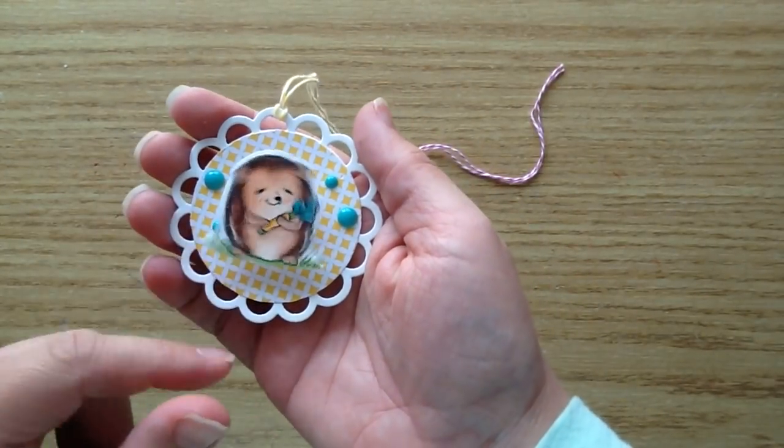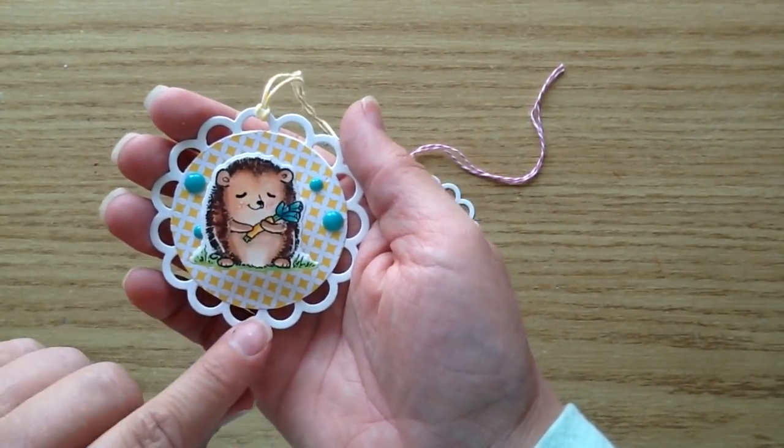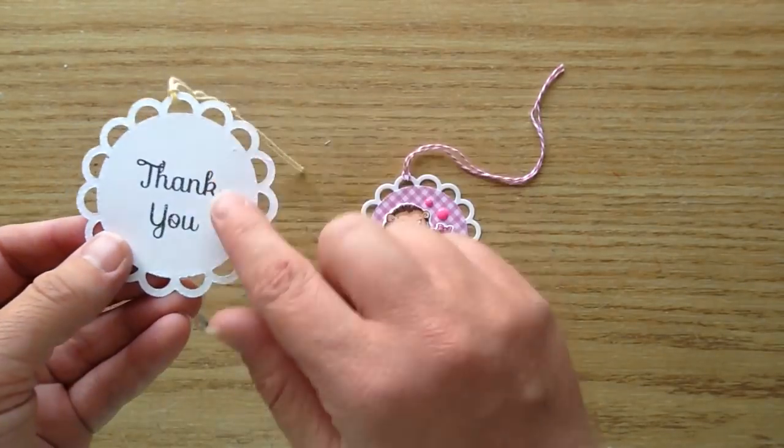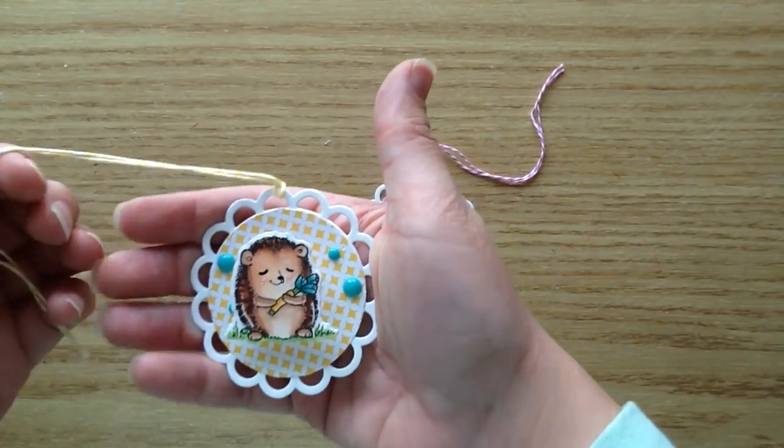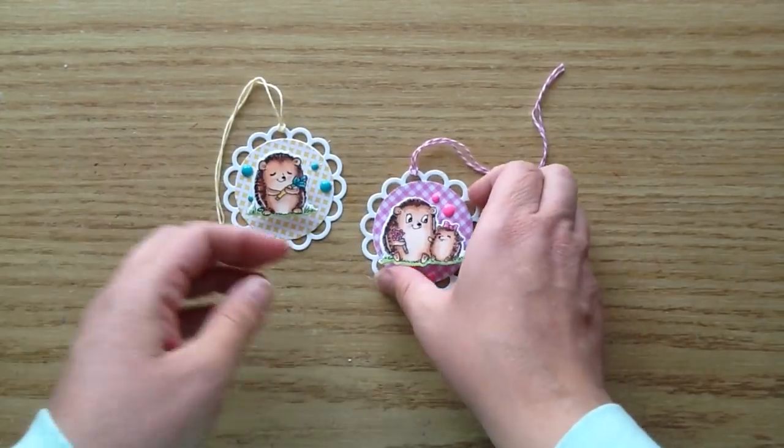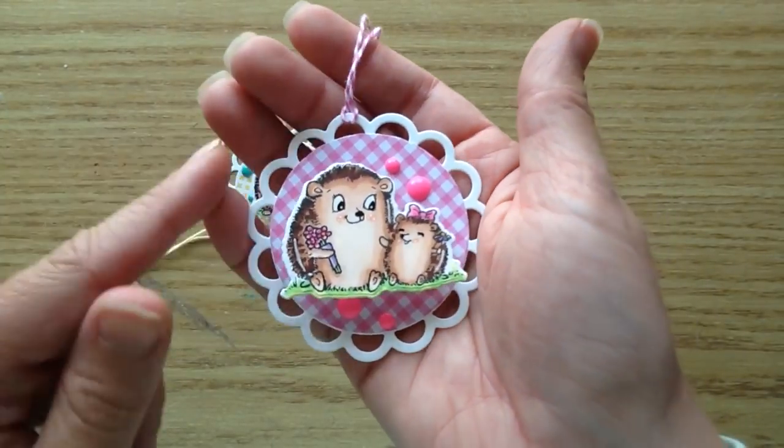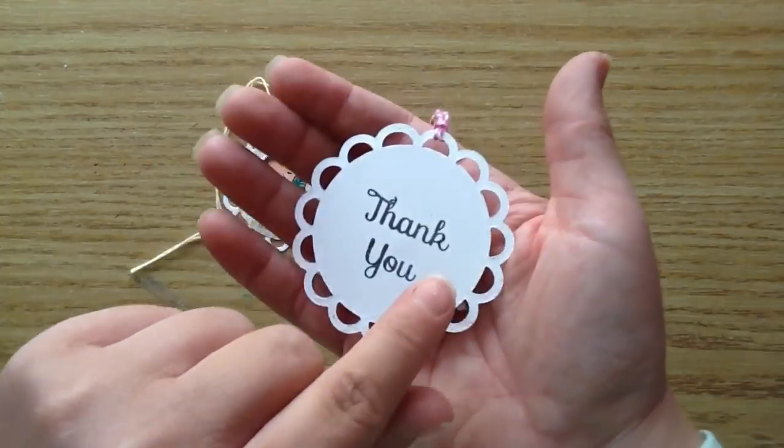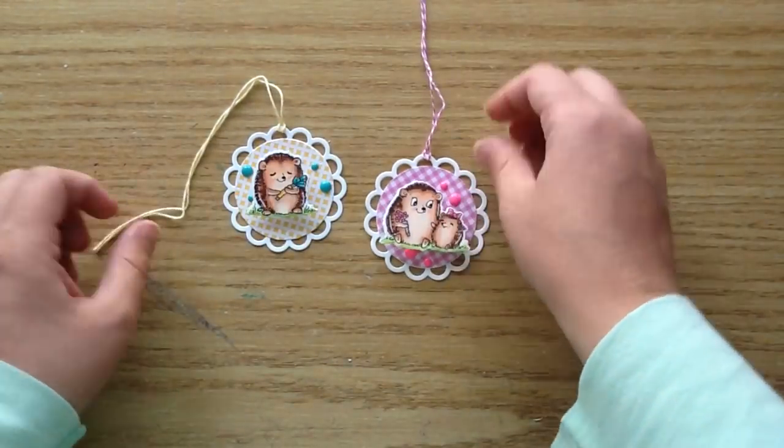So you can see there the little wobbler and then when you flick on it it just kind of moves back and forth which is such a cute little interactive piece. And then I also have the sentiment thank you on the back there. And then here is the other one with these cute little hedgehogs. I love this one so much. And then also I have the thank you on the back here.